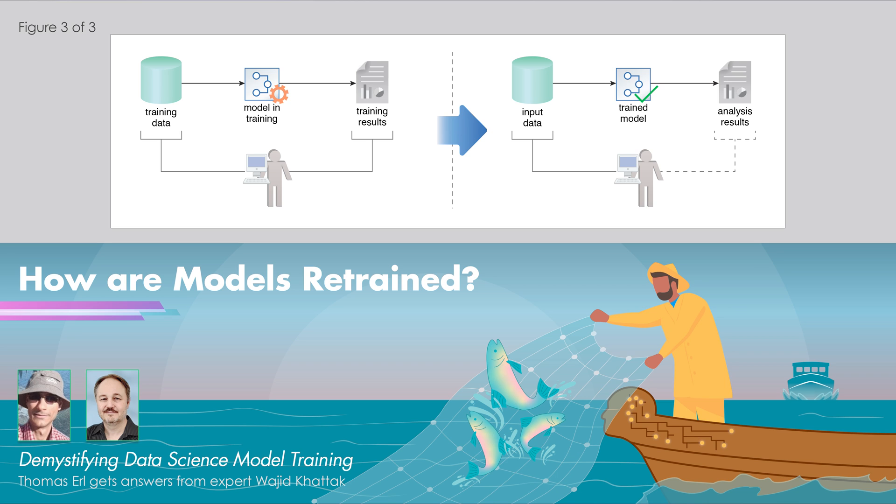Once we have our model trained, it gets deployed as part of some sort of business application - say for example, a recommendation system or spam email detection. Now there has to be something in place that looks at the efficiency of our model, because over the period of time there could be changes.